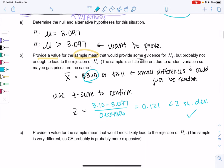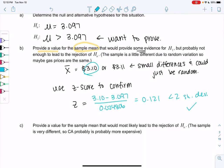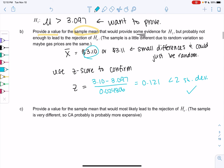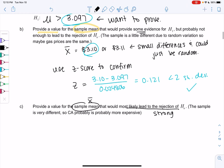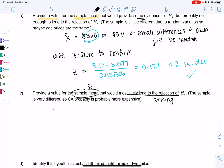Versus strong evidence, right, we're going to have really expensive gas, like $4, $5, maybe even $3.50 is enough, but significantly larger than that $3.09. So we're going to provide a value, again, for the sample mean, x-bar, that would most likely lead to rejection. That means strong evidence. So the sample is very different. So California is probably more expensive.